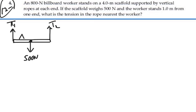And there's a worker standing near one end, one meter from one end, and the weight of the worker is 800 Newtons. So it looks something like this. We can think of a point A at this end and a point B at this end. And we're asked to find the tension in the rope nearest the worker. So we actually want to find T1 in this case.